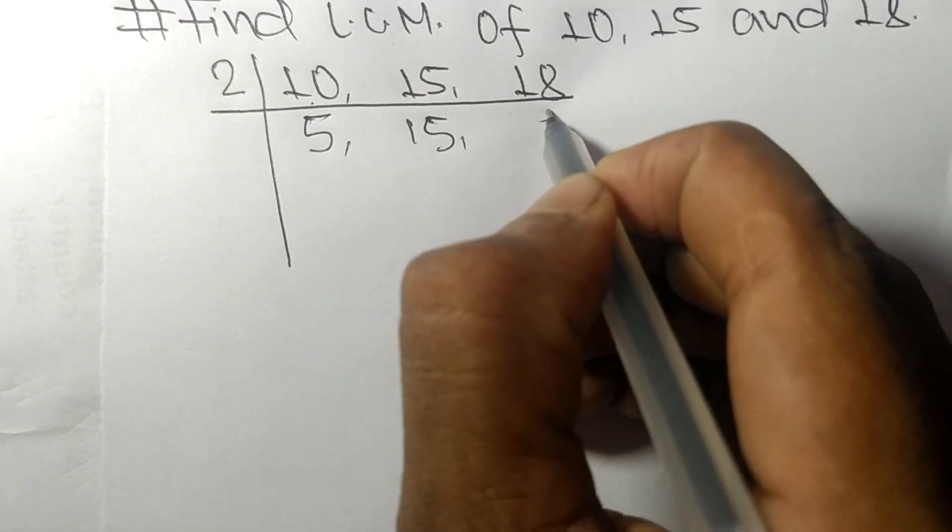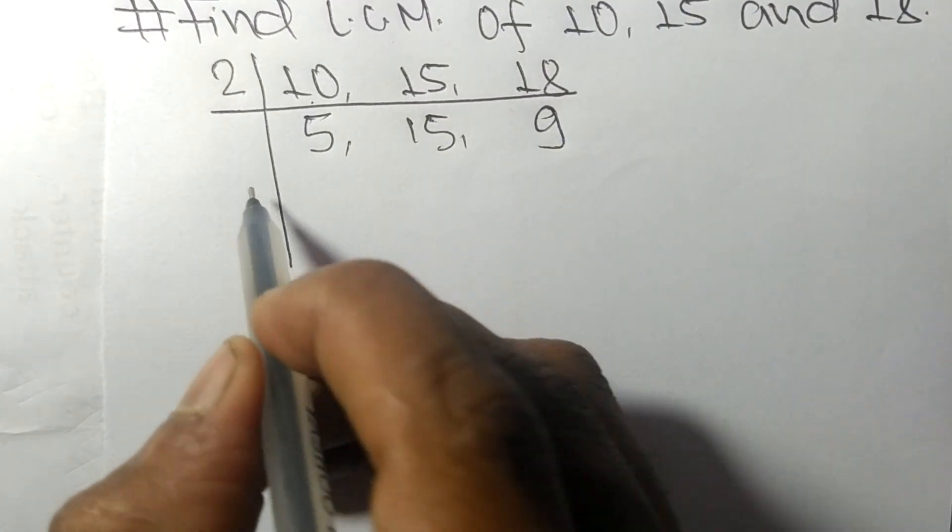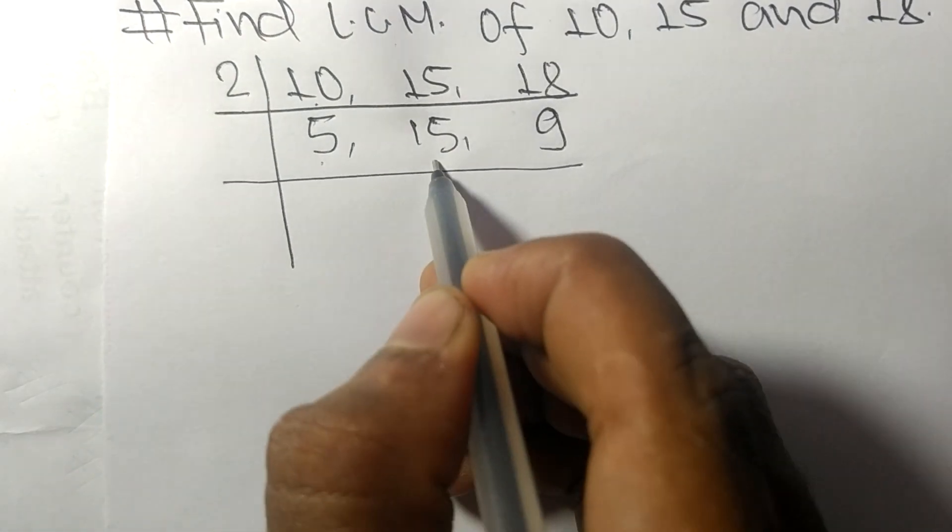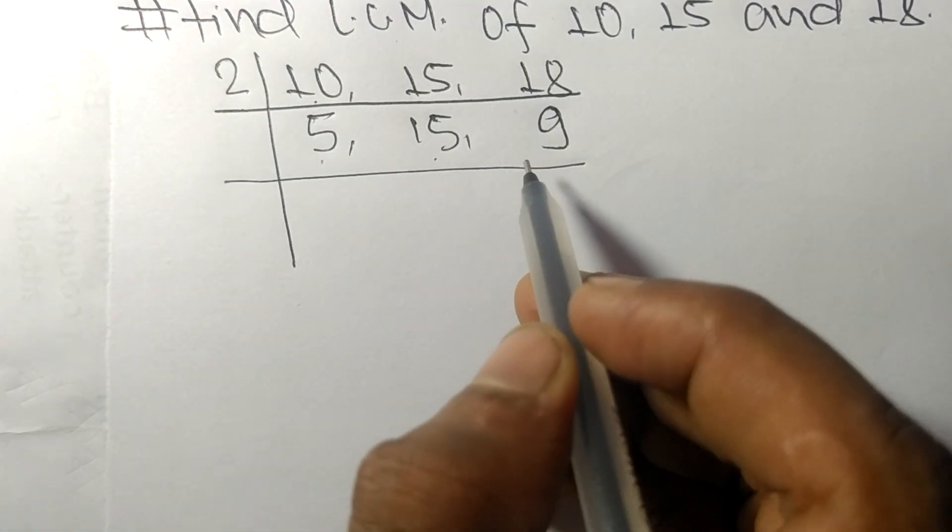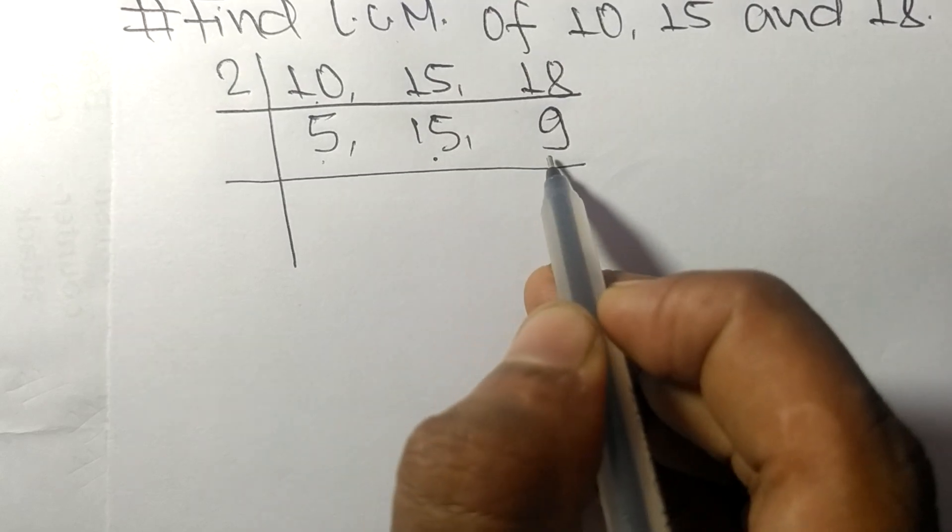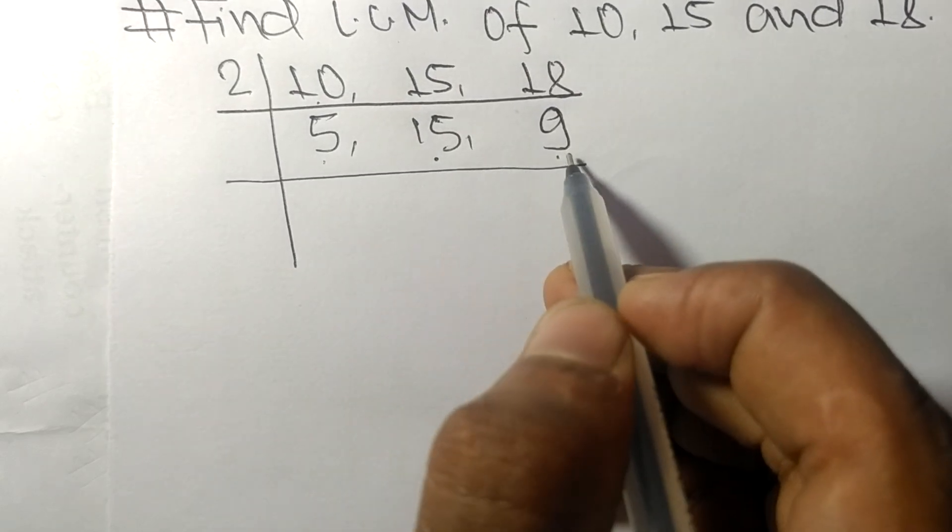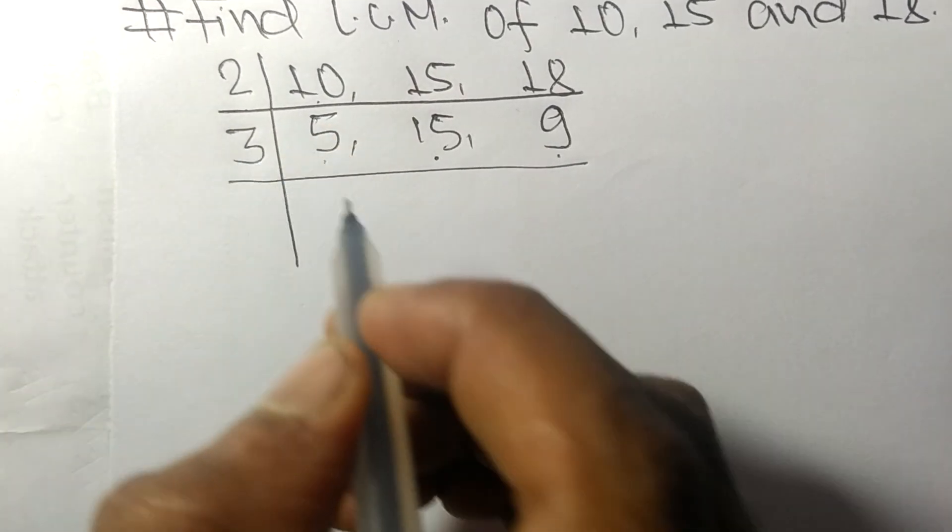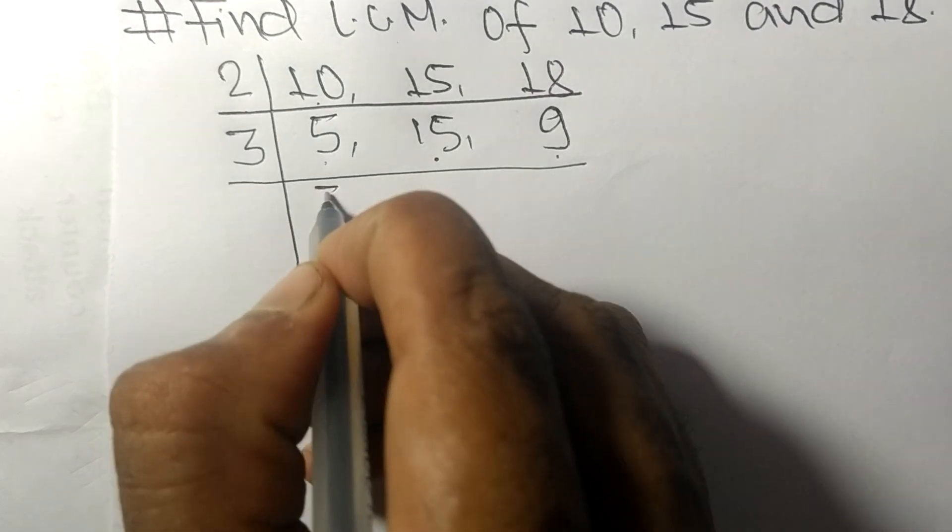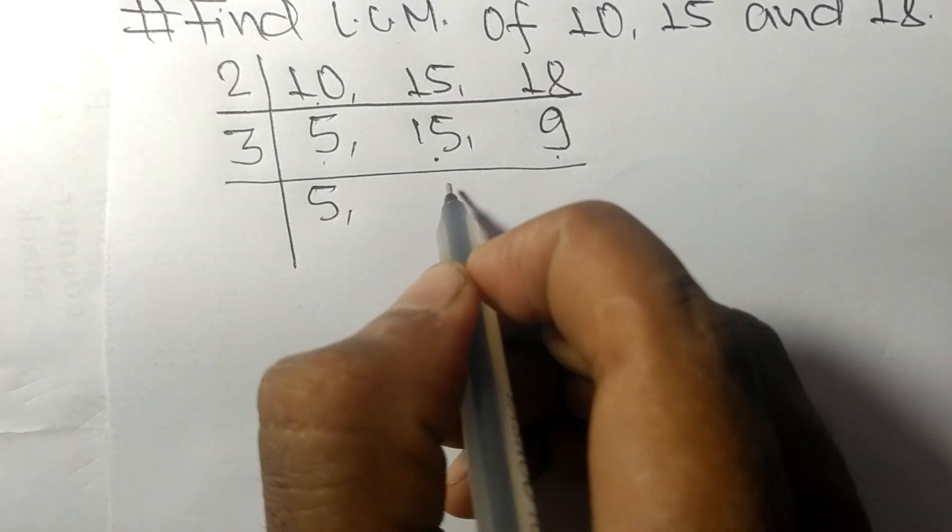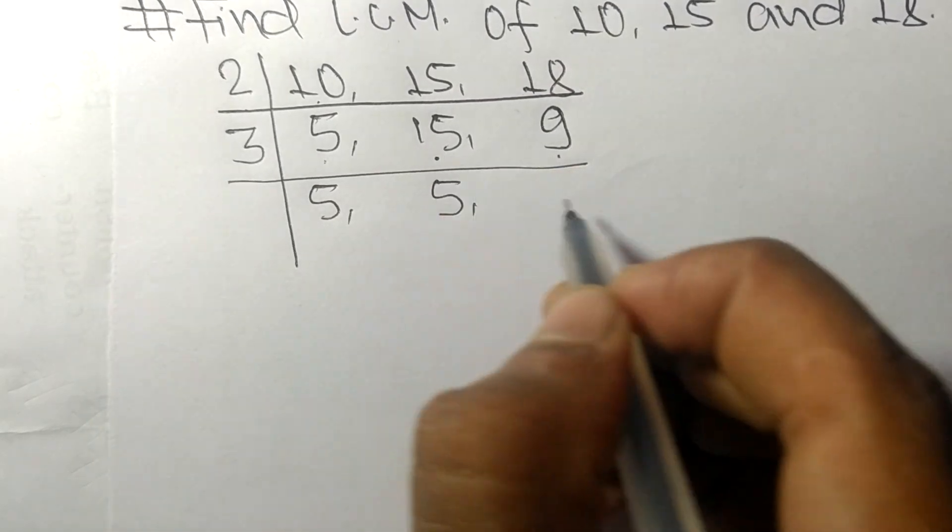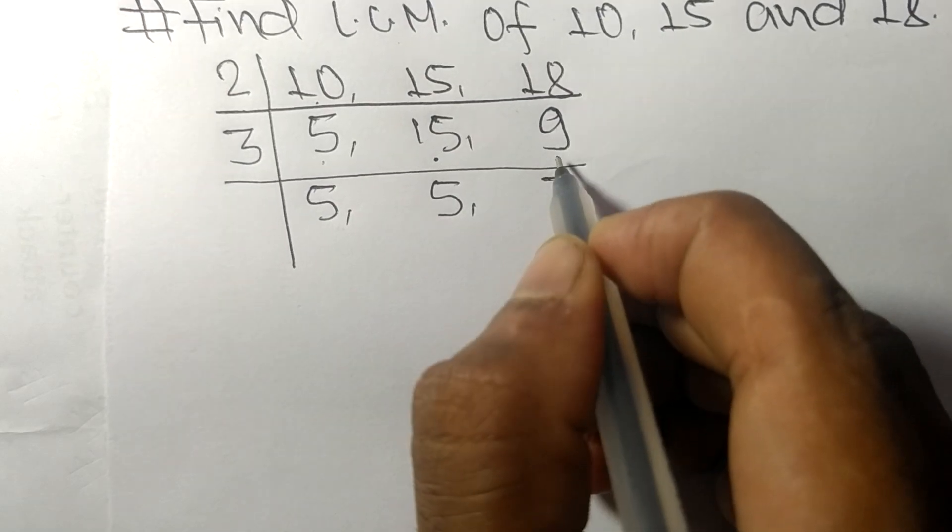So now we got 5, 15, and 9. Among them, 15 and 9 are exactly divisible by 3. 5 not divisible so it is same, 3 times 5 means 15, 3 times 3 means 9.